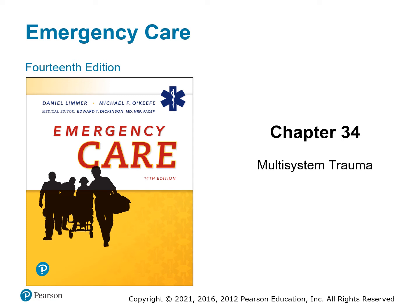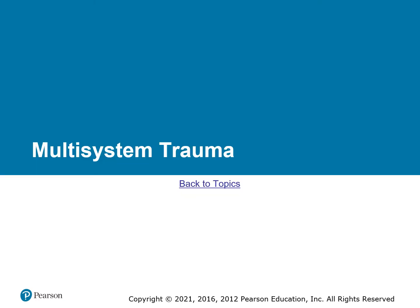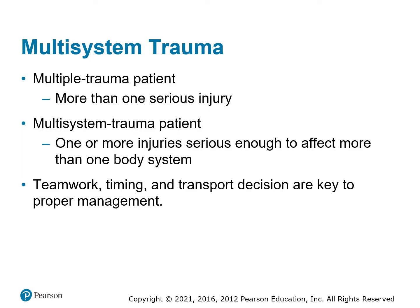Chapter 34: Multisystem Trauma. A multi-trauma patient is one that has more than one serious injury, while a multi-system trauma patient has more than one injury that affects more than one body system. So we've got a patient who has multiple things going wrong at the same time.